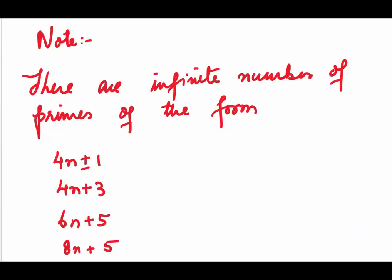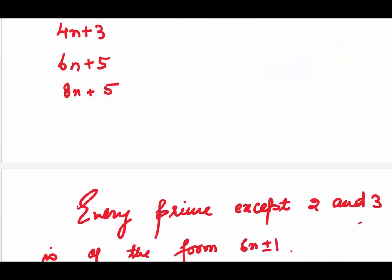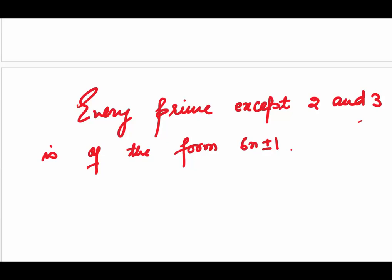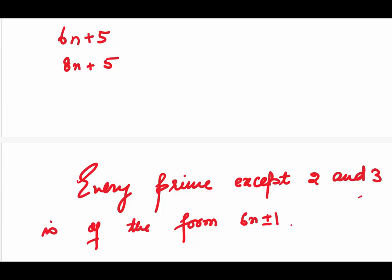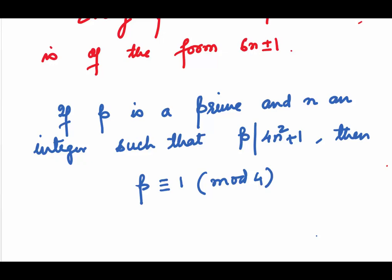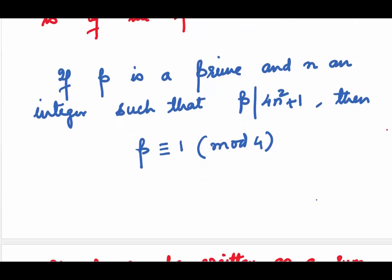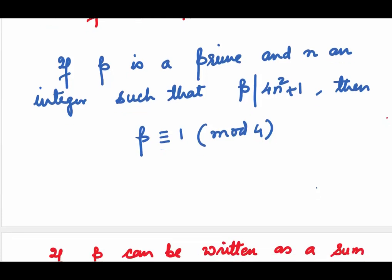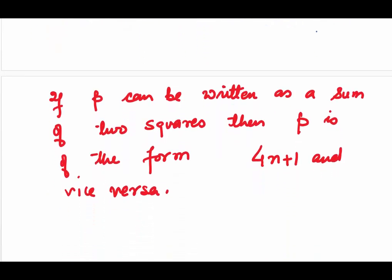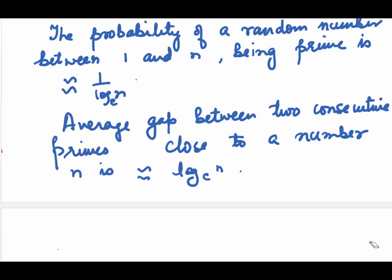Note, there are infinite number of primes of the form 4n plus 1, 4n plus 3, 6n plus 5, 8n plus 5. Another thing, every prime except 2 and 3 is of the form 6n plus minus 1. Few more results: If p is a prime and n some integer such that p divides 4n square plus 1, then p will always be congruent to 1 mod 4. If p can be written as a sum of two squares, then p is of the form 4n plus 1 and vice versa. The probability of a random number between 1 and n being a prime is approximately 1 upon natural logarithm n and the average gap between two consecutive primes close to a number n is approximately natural logarithm n.